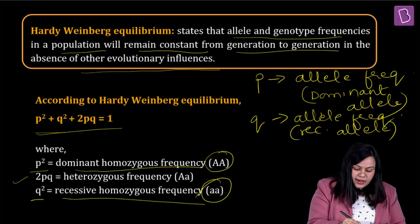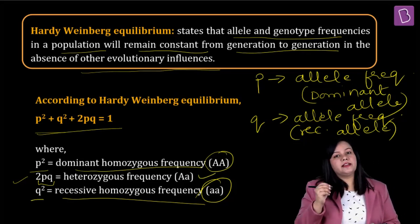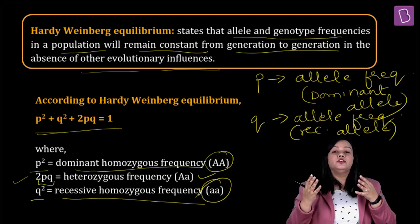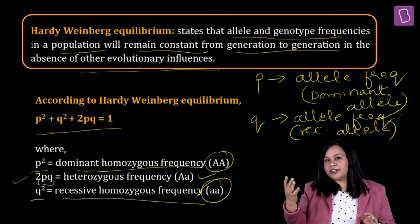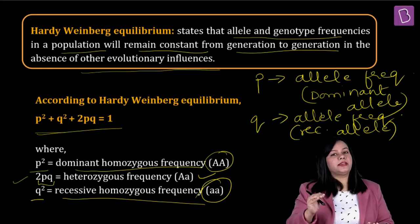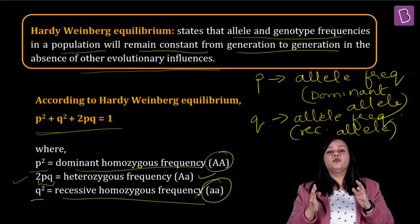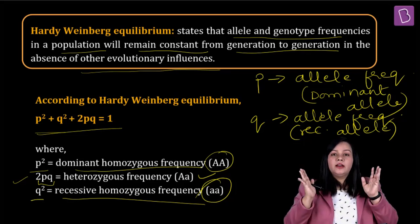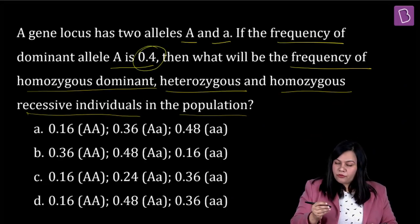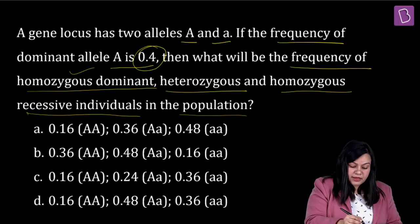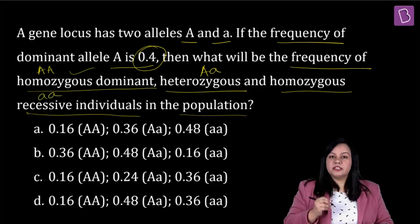Applying this to the question: the frequency of dominant allele capital A is 0.4. We are asked about the frequency of homozygous dominant (AA), heterozygous (Aa), and homozygous recessive (aa) individuals. According to Hardy-Weinberg's equilibrium, the sum of allele frequencies equals 1 at a given locus. Since P is 0.4, Q = 1 − 0.4 = 0.6.